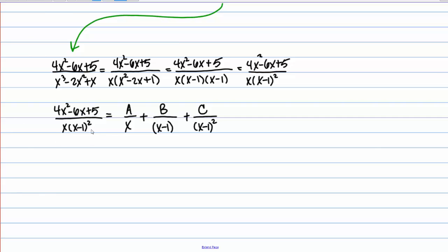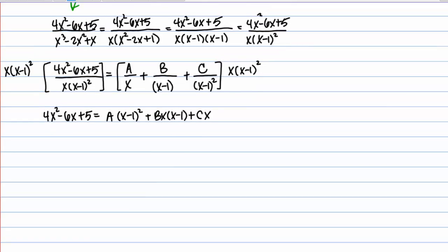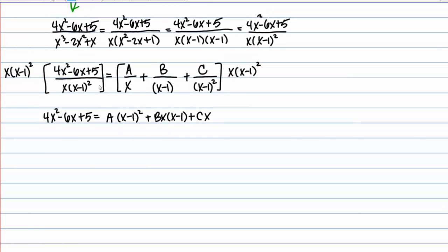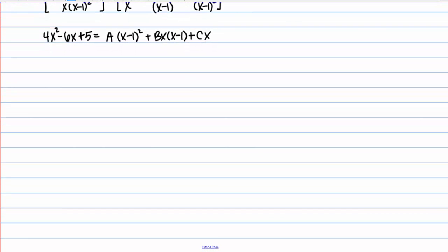Our next step is to solve for the coefficients A, B, and C. We do that by multiplying both sides of the expression by the denominator x times (x minus 1) squared to eliminate all the denominators. On the left we're left with 4x squared minus 6x plus 5. On the right, distributing and simplifying, we get A times (x minus 1) squared plus Bx times (x minus 1) plus C times x. With more complicated partial fraction decompositions like this one involving repeated linear factors, you sometimes need to combine different methods to solve for the coefficients.